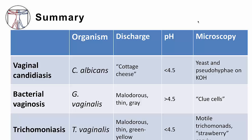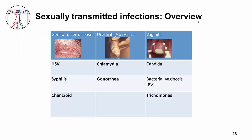Here's a summary to compare the three main disease entities discussed today: vaginal candidiasis, bacterial vaginosis or BV, and trichomoniasis. Thanks for your attention and peace out.